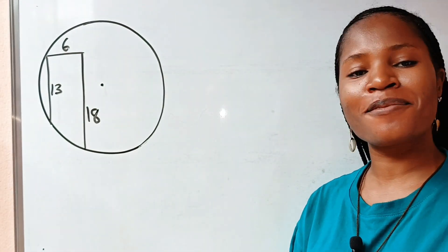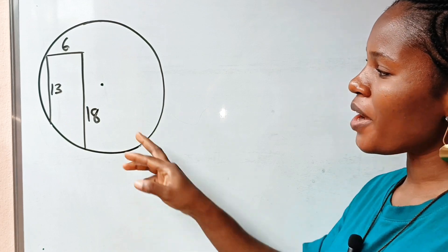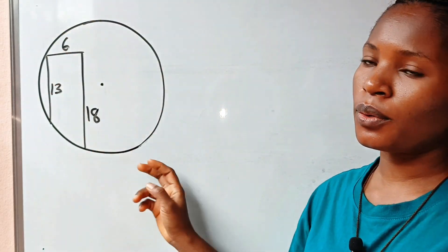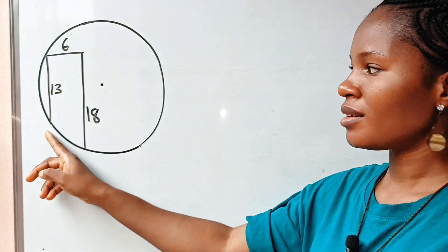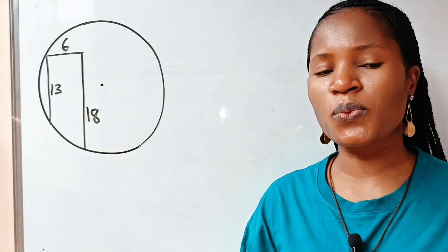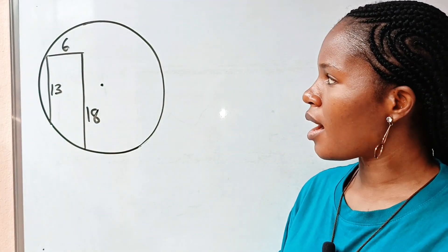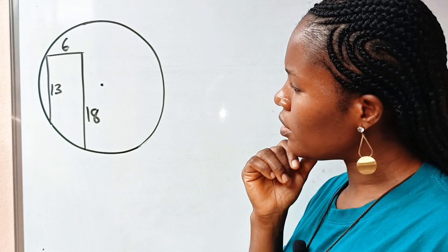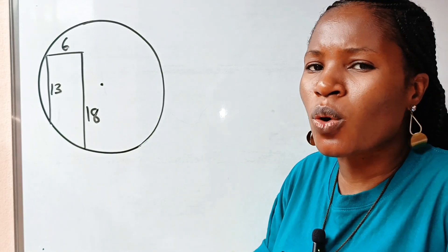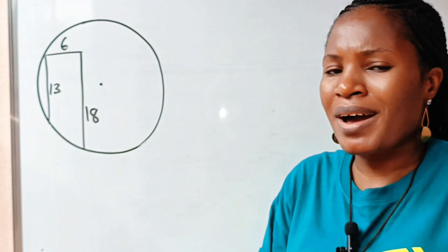Hello friends, welcome back to my channel. Today we are asked to find the radius of a circle. This is not drawn to scale. From here to here is 13, from here to here is 18, from here to here is 6, and we are asked to find the radius. Now, how do we bring in the radius of this circle into the picture? Let's solve this using Pythagoras' theorem.